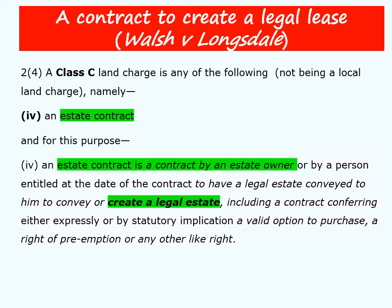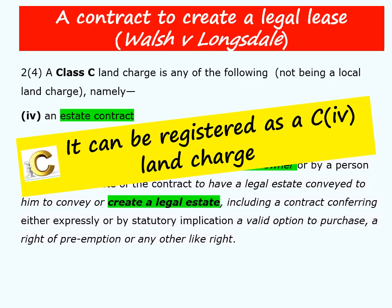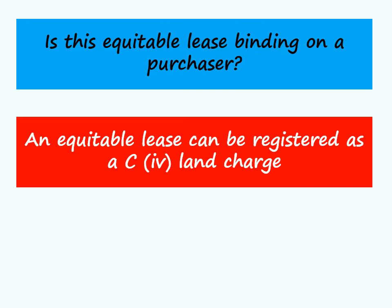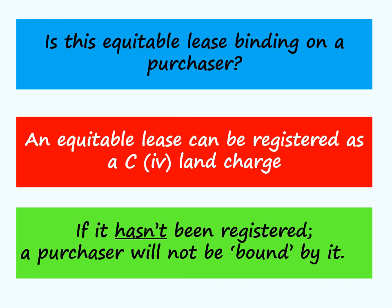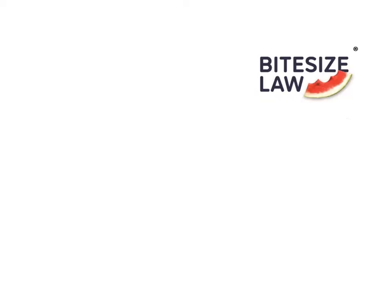If you're new to land law you may find this next point a bit advanced, but if you've come across the case of Walsh v Lonsdale and similar cases dealing with how an equitable lease can arise when the parties don't create a legal lease, note that because you have a valid contract to create a lease it can be registered as a land charge to protect it. This point will often come up at the end of a question involving Walsh v Lonsdale. If title to the land is unregistered and the issue is whether the lease takes priority over a new owner, you will need to explain that it can be registered as a C4 land charge.